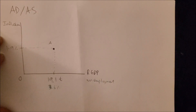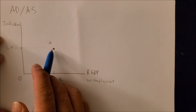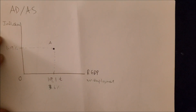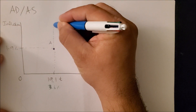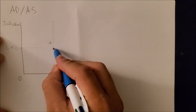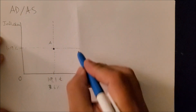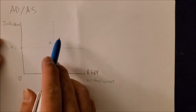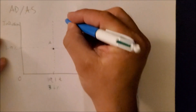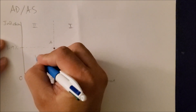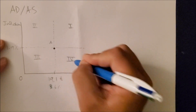Before we go into the actual AD-AS graph, I want you to see what we have. Based on point A at equilibrium, what happens if we extend the vertical dotted line further up and extend the horizontal line further to the east? It now looks as if we have not one but four quadrants, which we can name one, two, three, and four.